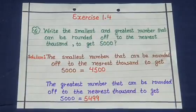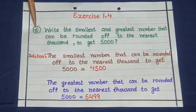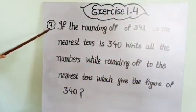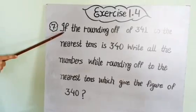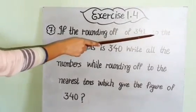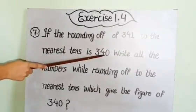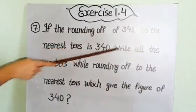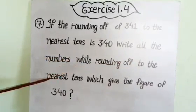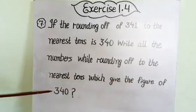Students, write the 6th statement on your notebook and solve the sum like this. Now we solve the 7th statement: if the rounding off of 341 to the nearest tens is 340, write all the numbers whose rounding off to the nearest tens gives the figure of 340.